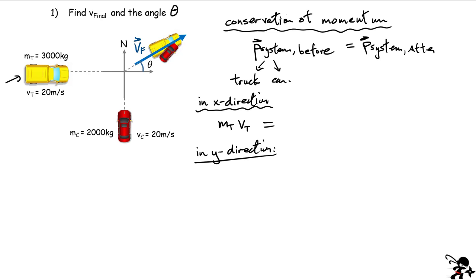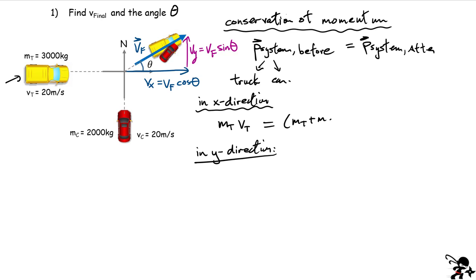After the collision we have a velocity going off at an angle. I can break that velocity down into two components: the x component is vf·cos(θ) and the y component is vf·sin(θ). The momentum in x after the collision is the total mass — mass of truck plus mass of car — multiplied by vf·cos(θ). This is equation one.